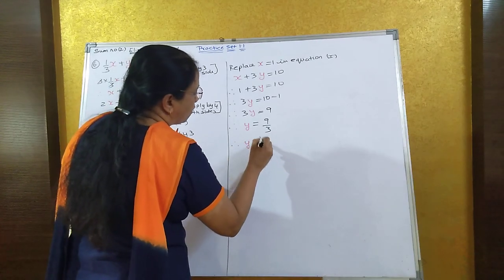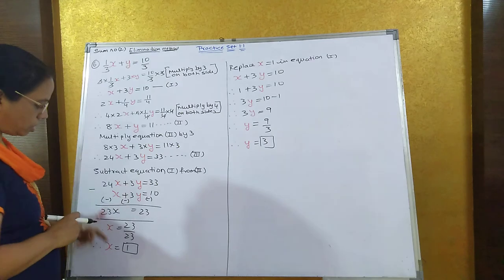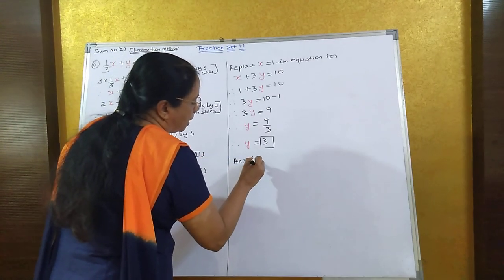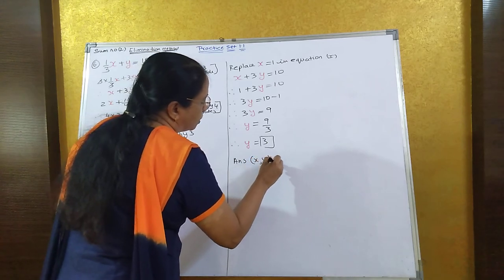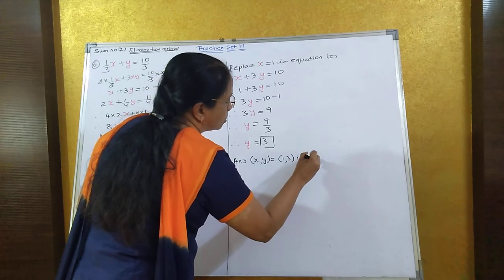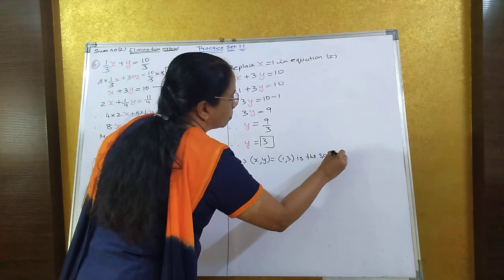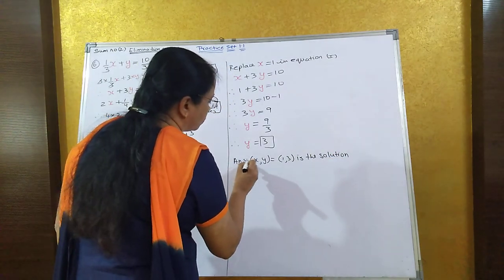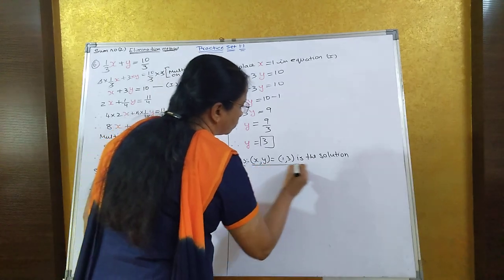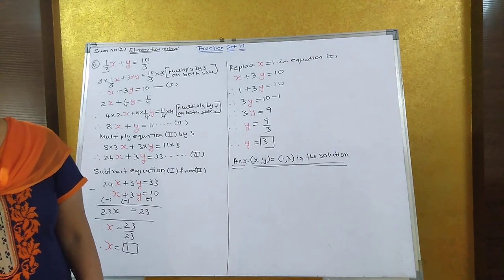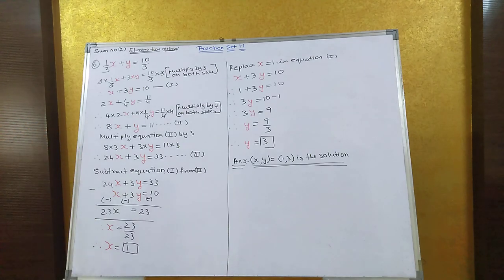We have got the value of y equal to 3 and x is equal to 1. So the solution is x, y that is equal to 1 and 3.